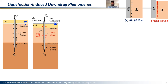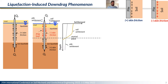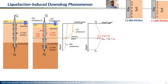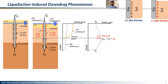The depth at which the negative skin friction changes to positive skin friction is known as the neutral plane, and at this point the relative movement of the soil with respect to the pile is zero. Because of the negative skin friction development, the actual load on the pile increases with depth, becomes maximum at the neutral plane, and then decreases further down because of the positive skin friction. As a result, the overall load on the pile increases, the section of the pile providing positive skin friction decreases, and there is settlement in the pile.